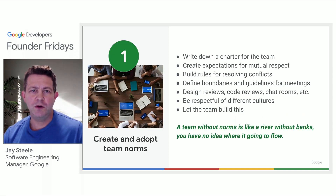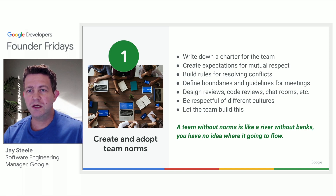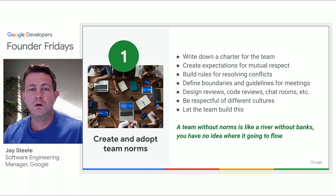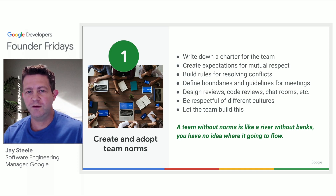Number one: create and adopt team norms. This one is really important. Create a charter of expectations for everyone on the team and let the team define it. Establish norms for mutual respect. Build rules for resolving conflicts. Create expectations for how everyone on the team expects to be treated and spoken to. If your organization is bridging different cultures, be really mindful here — it's a great opportunity to include everyone while defining this, and it will help facilitate areas where cultural differences could introduce confusion or frustration. Include expectations around meetings, tardiness, respectfulness in conversation, delivering feedback, how to communicate via email, chat rooms, code reviews, and other processes.